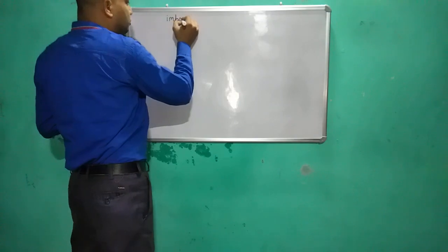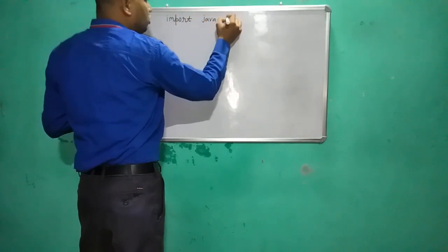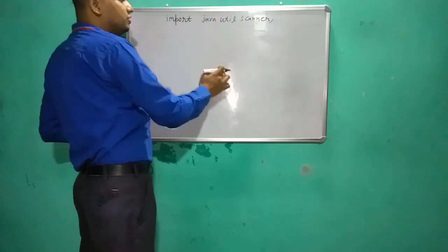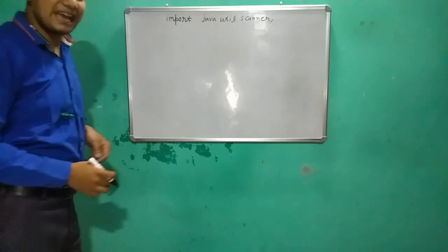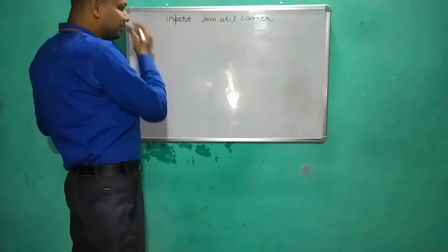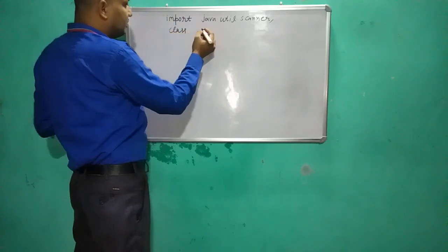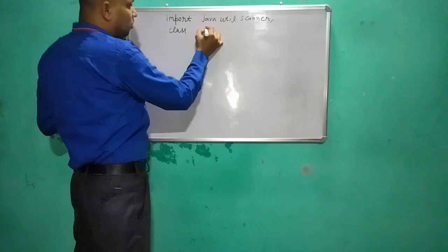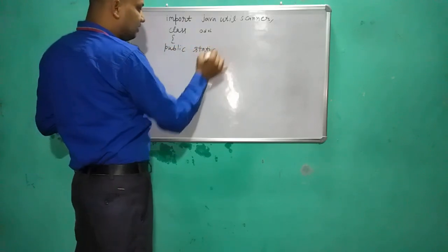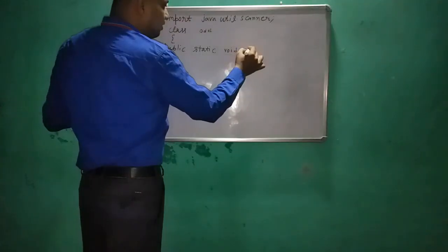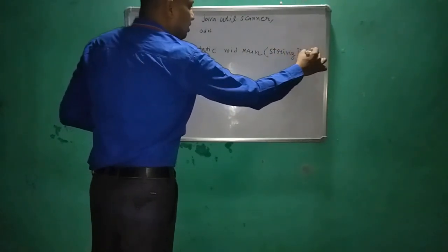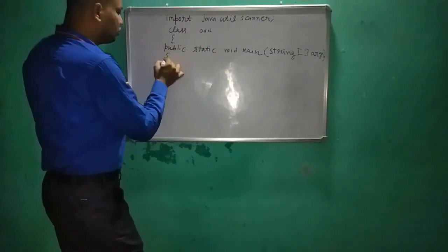To make an input program, I will import the utility package: 'import java.util.Scanner'. This includes the Scanner class so I can create an object of it and accept input from the user. Then we create a class — we can name it 'Even' — and write the main function, which has to be declared public and static with no return type: 'public static void main(String[] args)'.